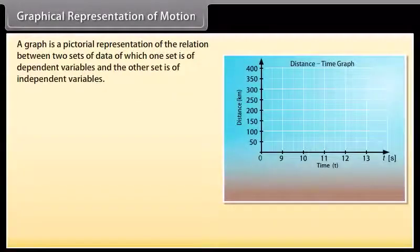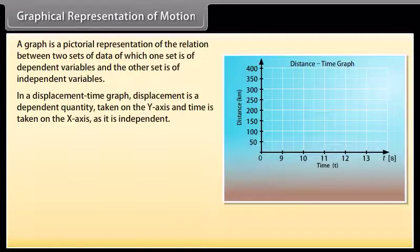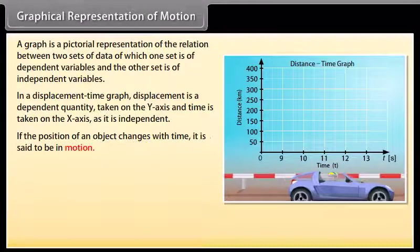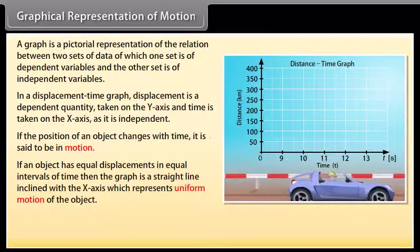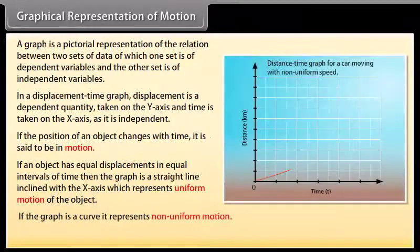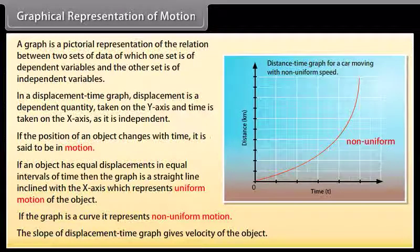A graph is a pictorial representation of the relation between two sets of data, of which one set is of dependent variables and the other set is of independent variables. In a displacement-time graph, displacement is the dependent quantity taken on the y-axis and time is taken on the x-axis. If the position of an object changes with time it is said to be in motion. If an object has equal displacements in equal intervals of time, the graph is a straight line inclined with the x-axis, which represents uniform motion. If the graph is a curve, it represents non-uniform motion. The slope of the displacement-time graph gives the velocity of the object.